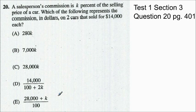Finally we can use the same strategy for percent questions as well. So this question comes from test 1 section 3. It's question 20 on page 401. And the question states a salesperson's commission is k percent of the selling price of a car. Which of the following represents the commission in dollars on 2 cars that sold for $14,000 each? Okay so usually easy percents to work with are 50% and 10%. So in this case I'm going to use 50% to make this easy.